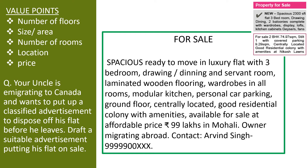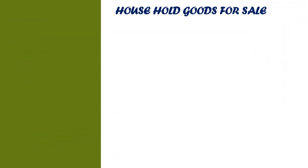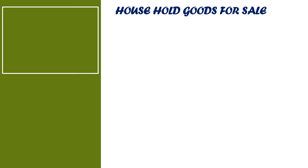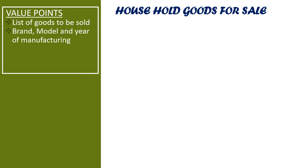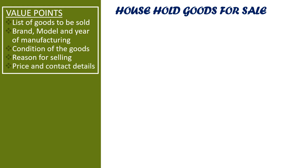Let's check out another example. Next, we have household goods for sale. If you are selling or buying household goods, you have to give a brief description of the product to be sold — brand name, model, year of manufacturing, condition of the goods, and reason for selling. After that, mention price and contact details.